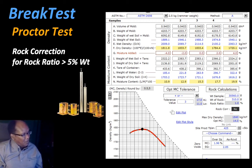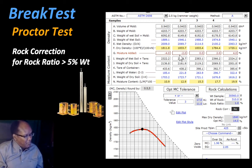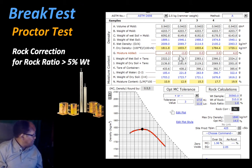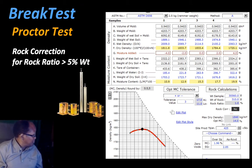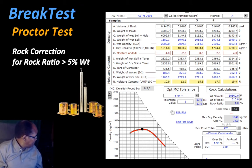In this video we are continuing with another feature of the proctor test. This video will talk about a feature called rock correction, which allows you to modify the optimum moisture content and maximum density when the rock ratio is 5% or above.